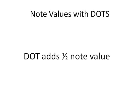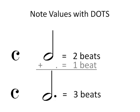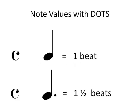Dots add half of the value of the note which they follow. Let's consider a half note in common time. It gets two beats, and half of two beats is one beat. So adding one to the original two makes three beats. In common time, a dotted quarter gets one and a half beats. That's one for the quarter note, and a half for the dot.